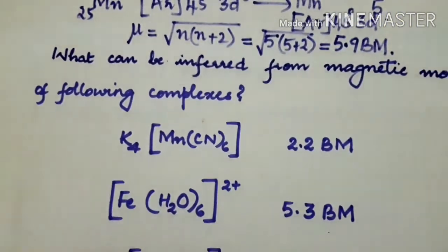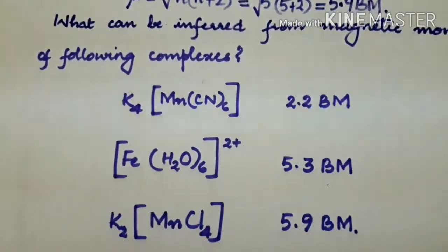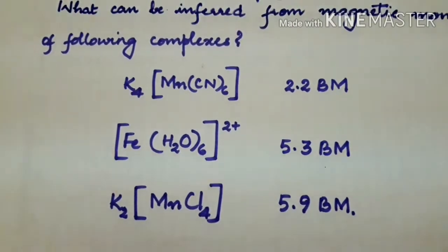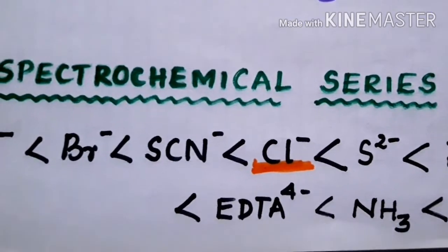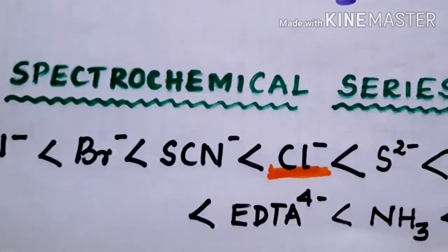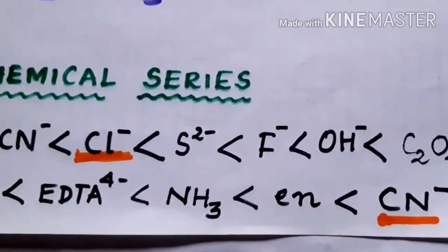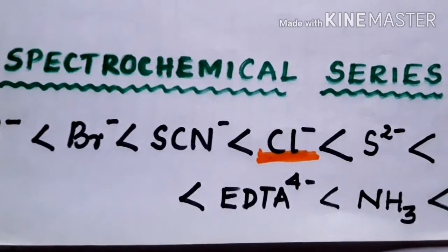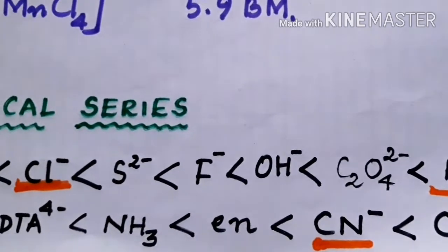Now we come to the question: what can be inferred from the magnetic moments of the following complexes? We are supposed to calculate the value and compare it with the observed value. To solve this, one has to identify what type of ligand is present. The complexes contain Cl⁻, H₂O, and CN⁻. According to the spectrochemical series, Cl⁻ is a weak ligand, water is moderately weak, and CN⁻ is a strong ligand.